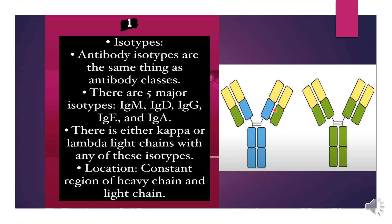Within a species, every normal individual will express all the isotypes in the serum, and different species inherit different isotypes. Therefore, when an antibody from one species is injected into another species, the isotopic determinant will be recognized as foreign, and that will induce an antibody response to the isotopic determinant present on the foreign antibody.